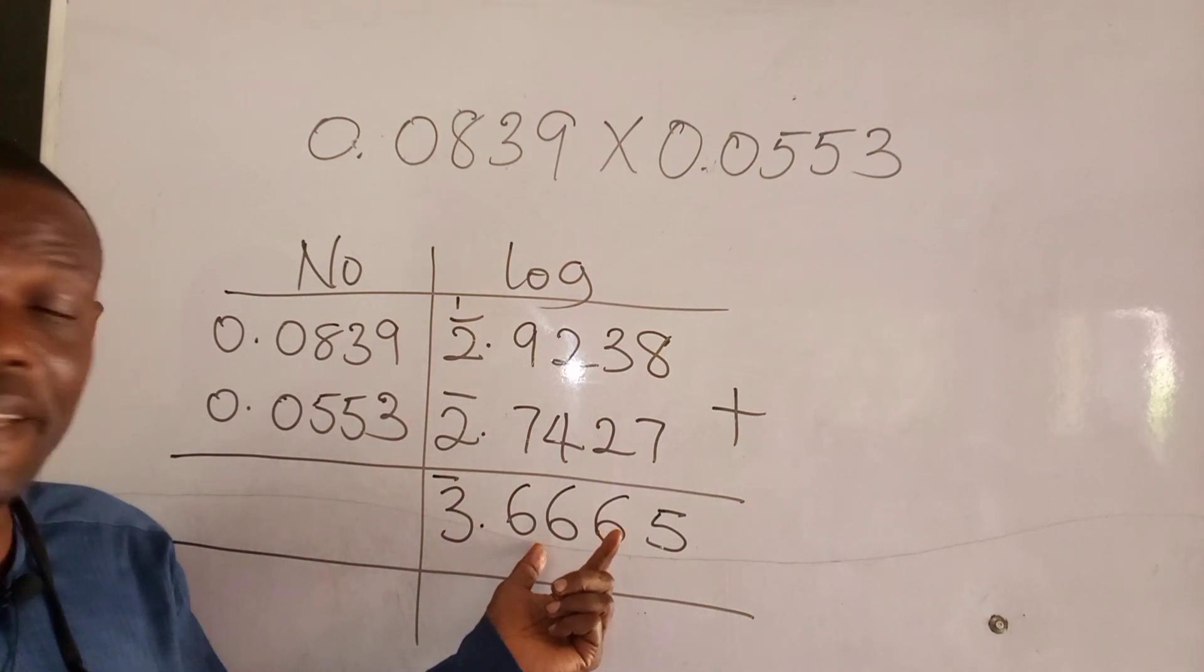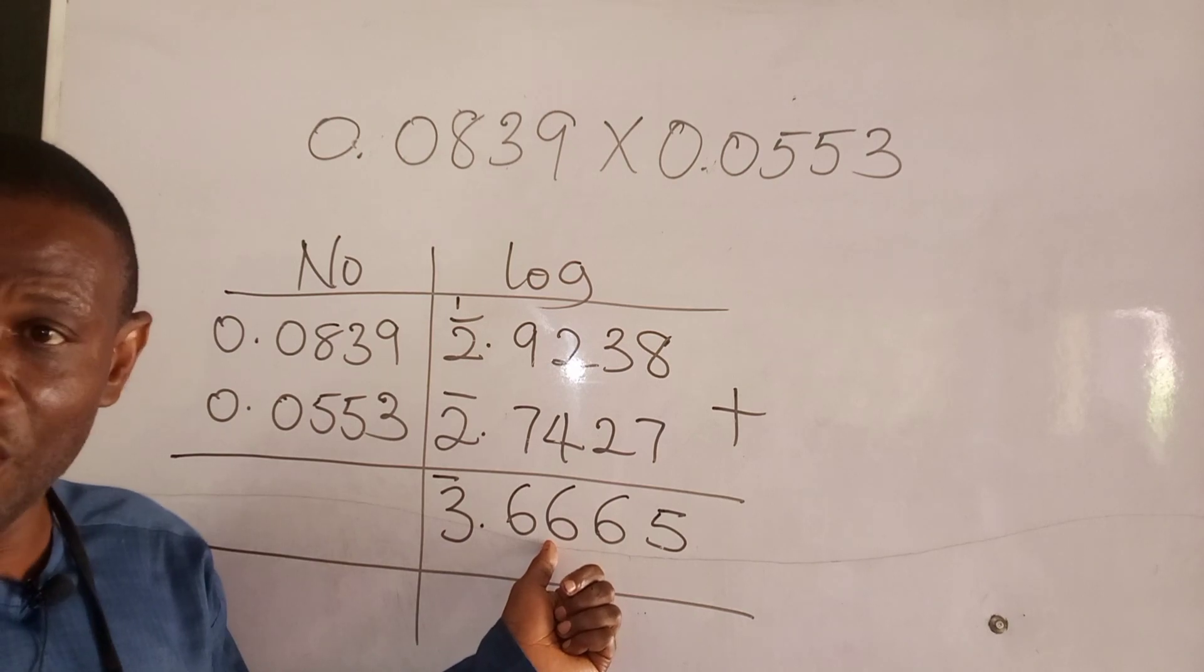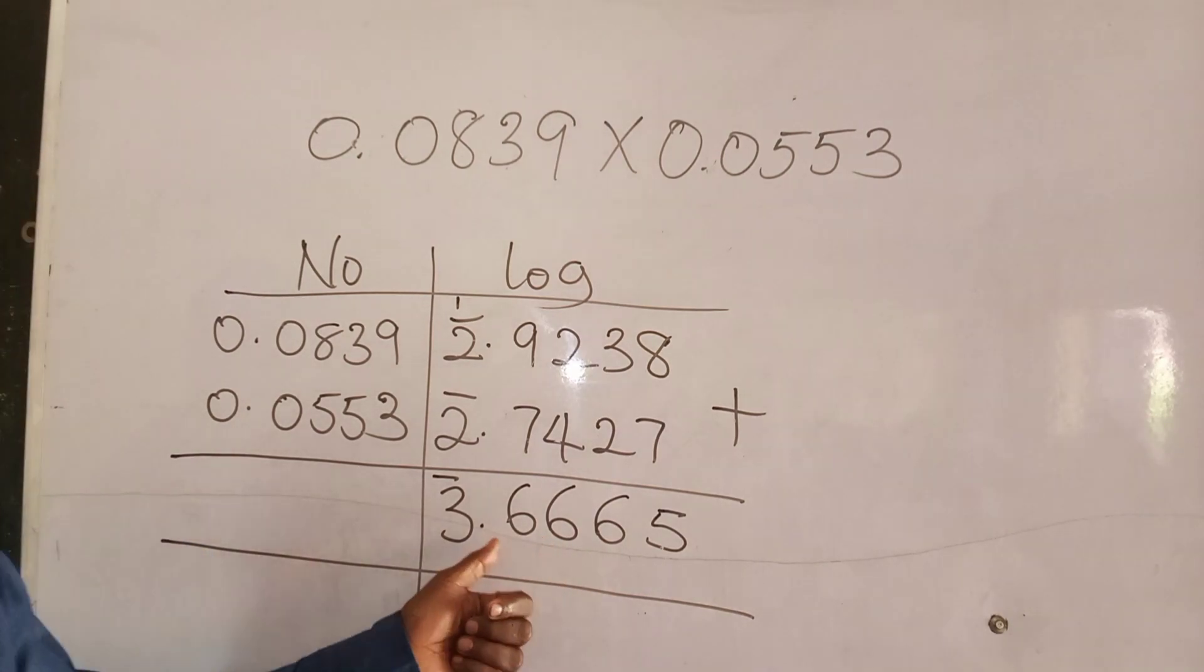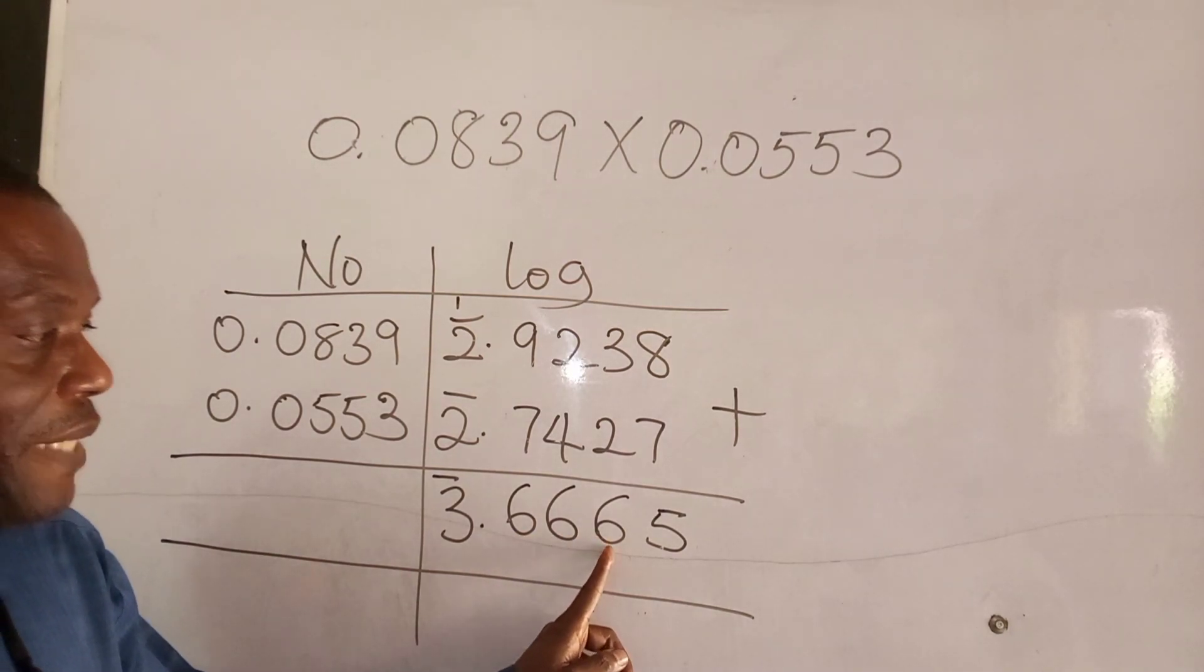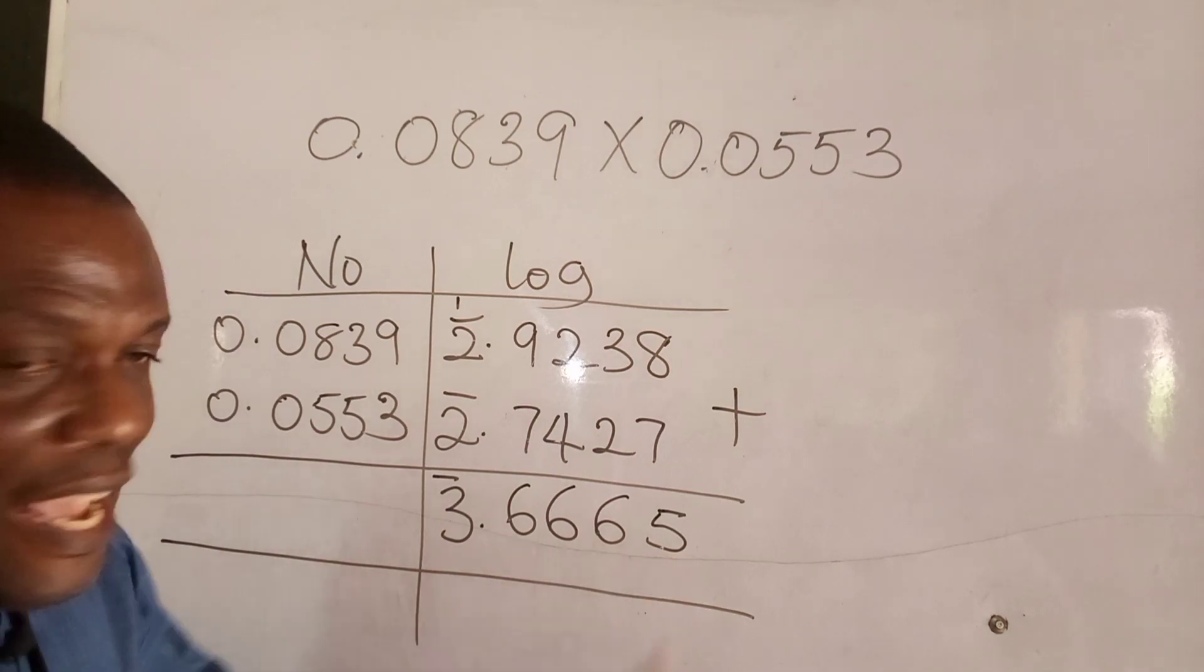Now we want to look at the anti-log. So you go to your anti-log, the four figure table. Anti-log. And what is the value for 66 under 6, difference 5? What is it?